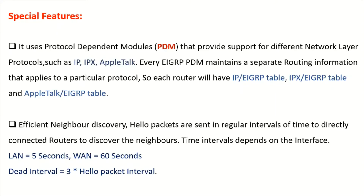EIGRP also provides efficient neighbor discovery. Hello packets are sent at regular time intervals to directly connected routers to discover neighbors. This time interval depends on the interface type. For a LAN interface, hello packets are sent every 5 seconds; for a WAN interface, every 60 seconds. A router is assumed dead if it doesn't receive a hello reply within three times the hello interval — for example, 15 seconds on a LAN interface.